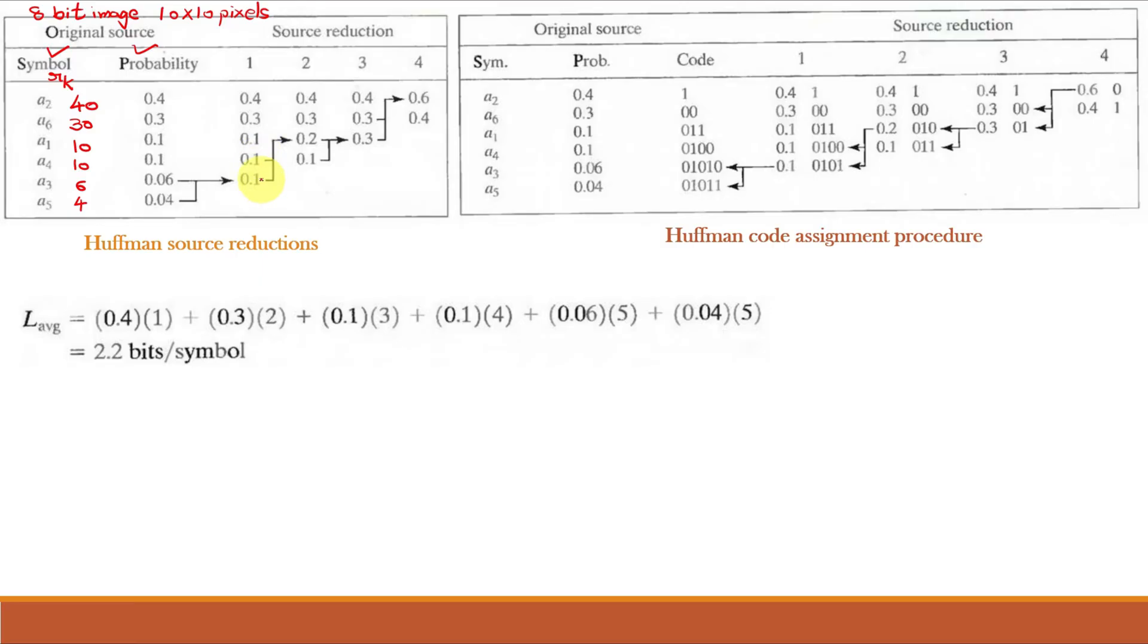Next add this 0.1 and 0.1 that will give you 0.2. So, that 0.2 will go up in the order over here in the next column. And this 0.1 will come down after sorting. Other values will be as it is. Now add these two values, you will get 0.3. Add these two that will give you 0.6. But as 0.6 is larger than 0.4, 0.4 will come down and 0.6 will go up in the order. This procedure is called Huffman source reductions.